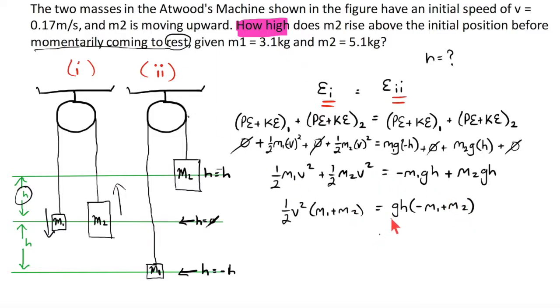Could divide both sides by everything over here that's not h. g times negative m1 plus m2. Which would cancel all those out. And we'd have a cool formula for h, which simplified is v squared times m1 plus m2 over 2g times m2 minus m1.